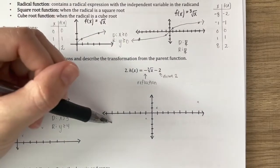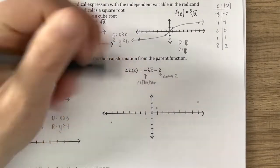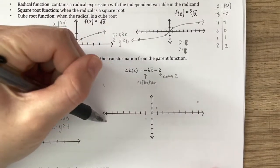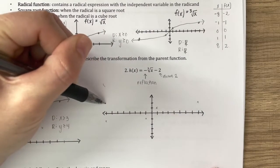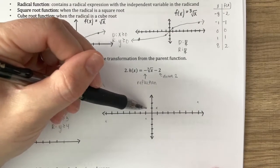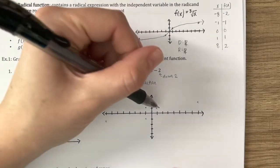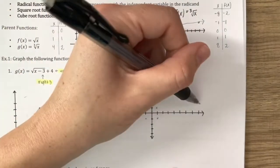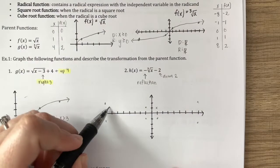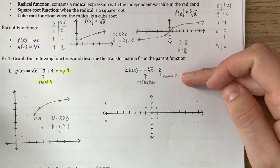Starting with the original parent function points, when I reflect over the x-axis: (negative 8, negative 2) becomes (negative 8, positive 2); (negative 1, negative 1) becomes (negative 1, positive 1); (0, 0) stays the same; (1, 1) becomes (1, negative 1); and (8, 2) becomes (8, negative 2). These reflected points then get translated down 2.